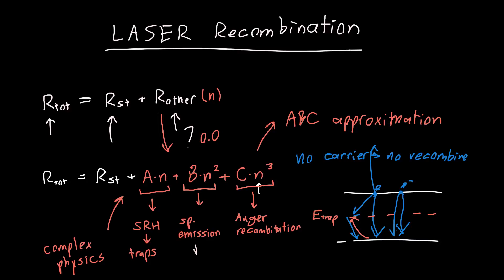And spontaneous emission in the future we'll see can be written in terms of some coefficient b times the np product or if n is equal to p then some coefficient just times n squared. And Auger recombination we might also talk about in the future but the physics involved is fairly complex and we're not going to get into it here. So now we have an answer for what our total recombination rate is in terms of the carrier density.